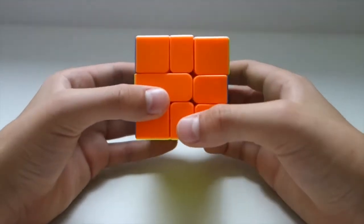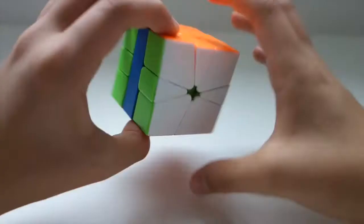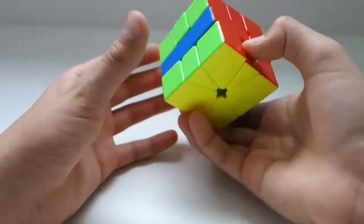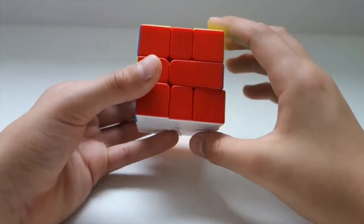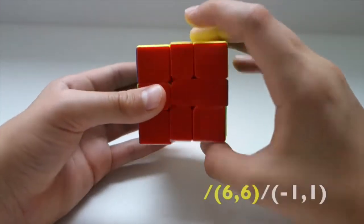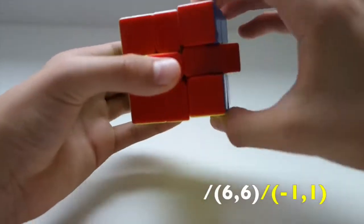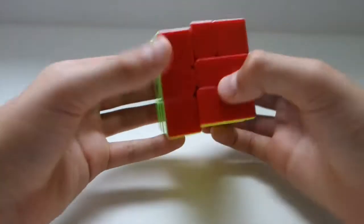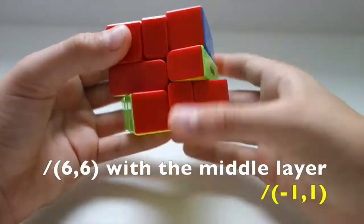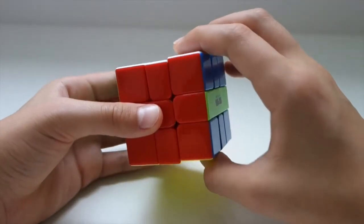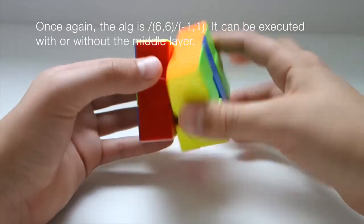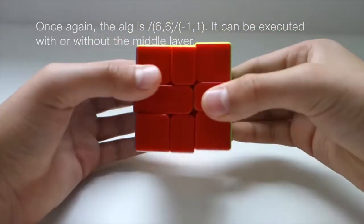Another equator problem you may have is this, where basically two faces of the equator are solved, and then the other two need to be swapped. This is a very simple case. Once again, there are two ways you can do it. You can either go... or you can just use the middle, the equator, and just flip like that.